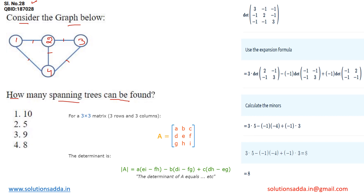When we have a complete graph, the formula for calculating the total number of spanning trees is different, but observe that this graph is not a complete graph. So let's calculate the total number of spanning trees that can be formed with the help of this graph.